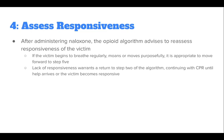After administering naloxone, the opioid algorithm advises to reassess the responsiveness of the victim. If the victim begins to breathe regularly, moans, or moves purposefully, it is appropriate to move forward to Step 5. However, a lack of responsiveness warrants a return to Step 2, continuing CPR and BLS until help arrives or the victim becomes responsive.